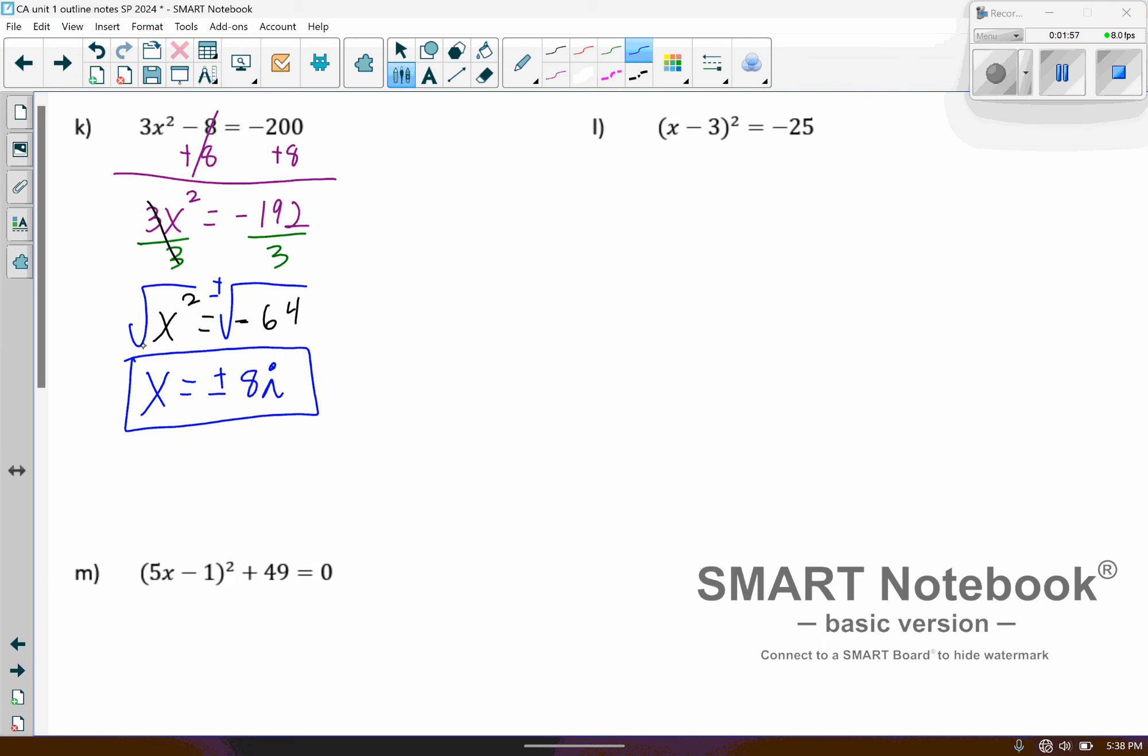Okay, moving on to these next examples should be pretty similar, except we have a little bit more going on here. We've got squared quantities. So x minus 3 squared. We're going to start by square rooting that. And then we have to square root the negative 25, put the plus or minus. So now we have x minus 3 equals plus or minus 5i. Then next, we need to isolate the variable. So we'll add 3 to both sides.